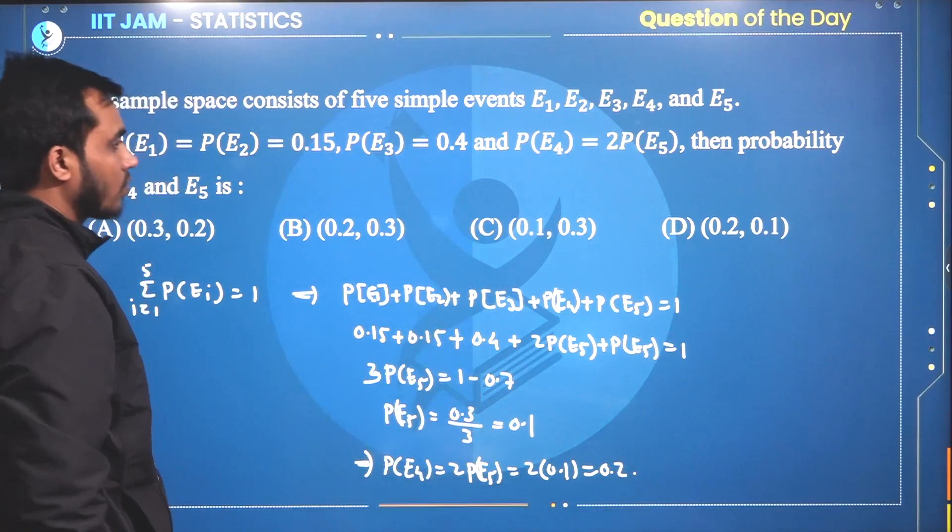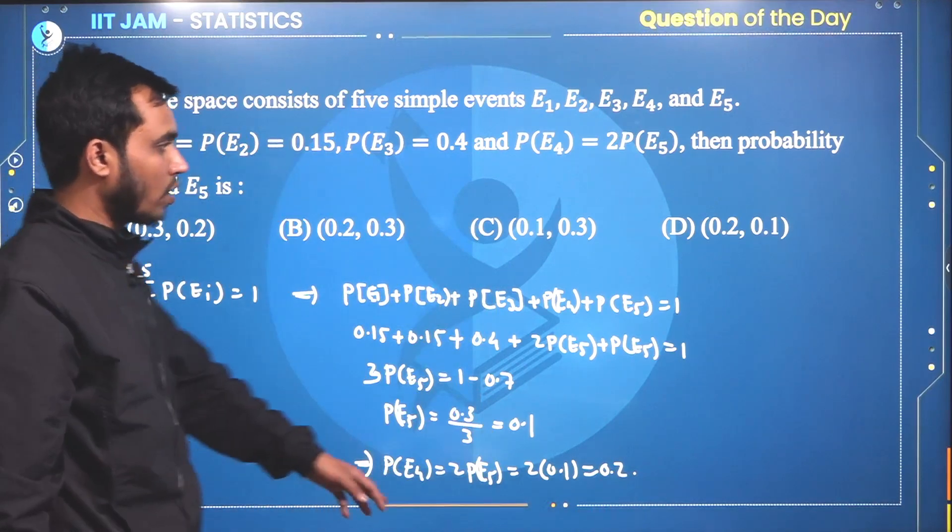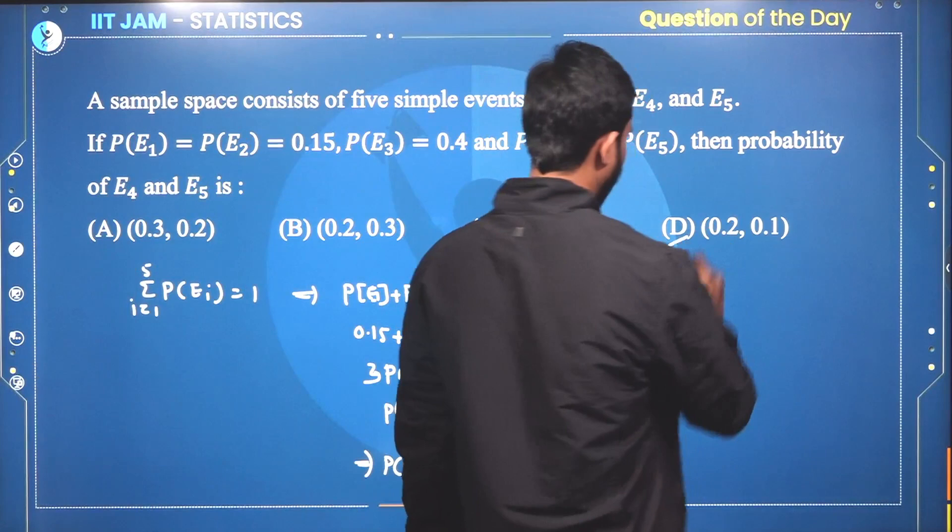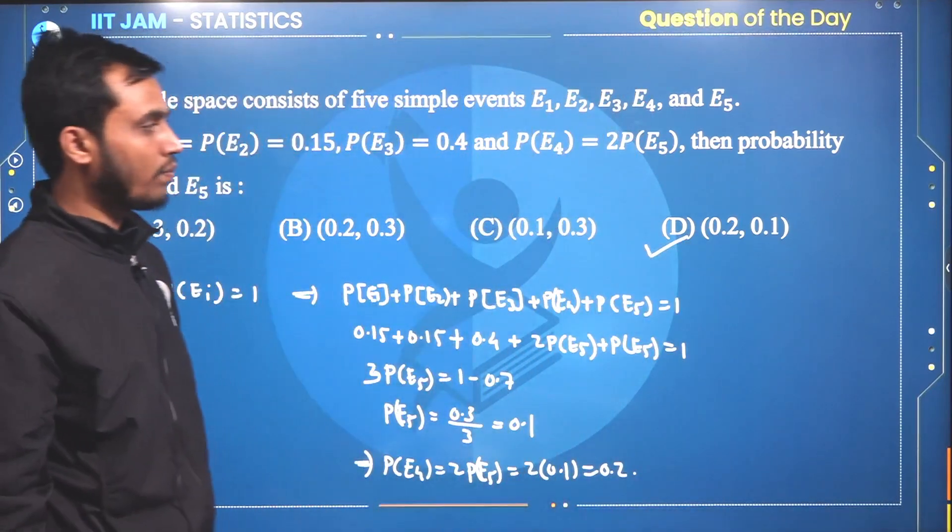So option D—here you can see the probability of E4 and probability of E5—option D may be the answer.